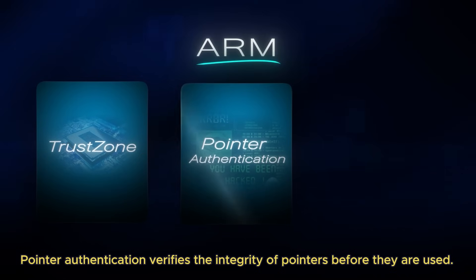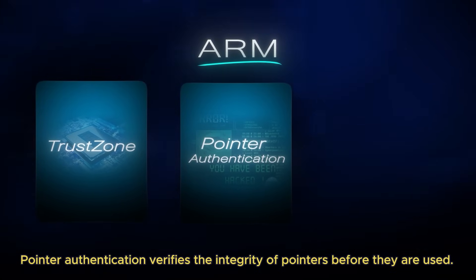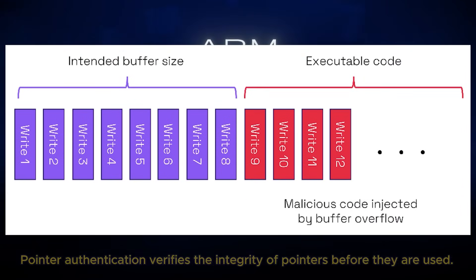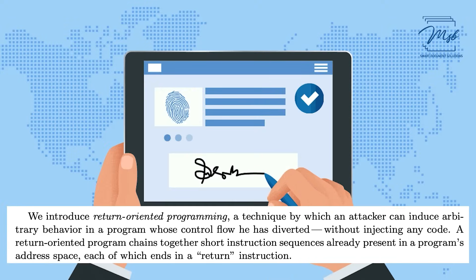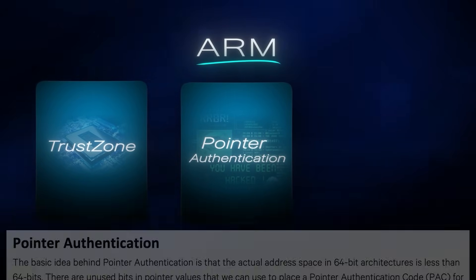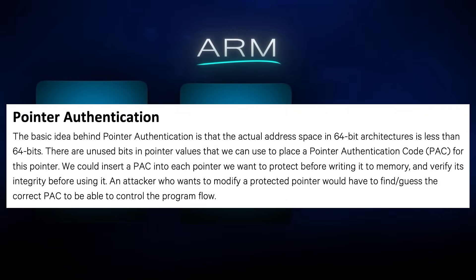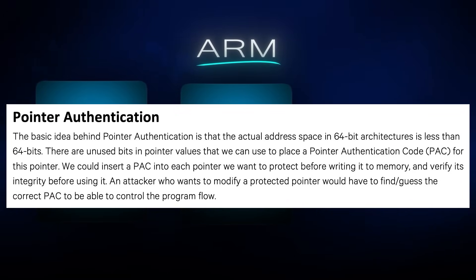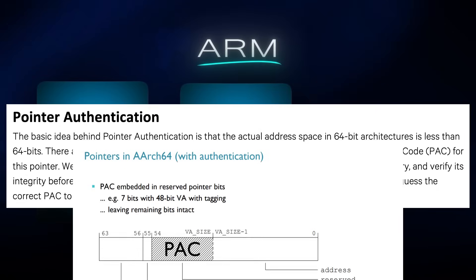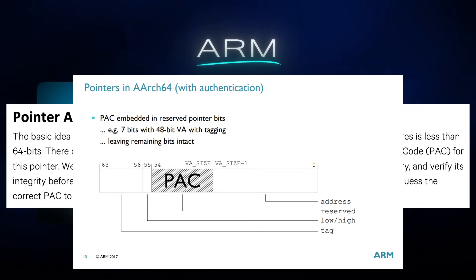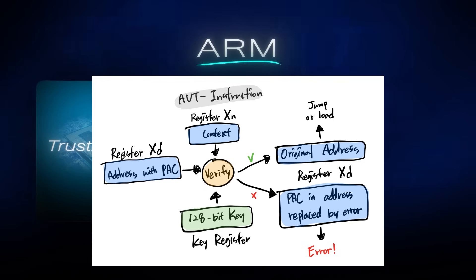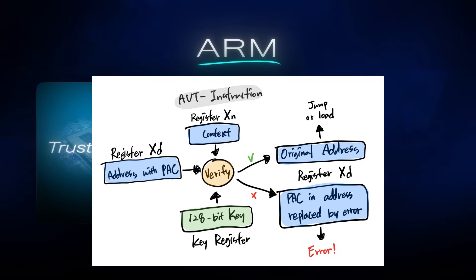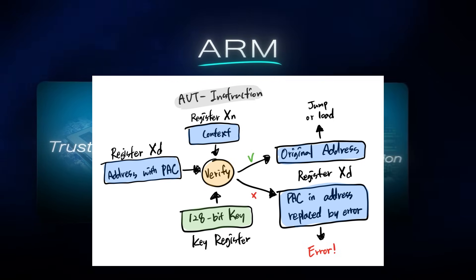Pointer authentication is a security feature designed to prevent memory corruption vulnerabilities such as buffer overflows and return-oriented programming attacks. It works by attaching a cryptographic signature known as a pointer authentication code or PAC to a program's pointers. When a program creates a pointer, a PAC is generated and stored in the unused high-order bits of the pointer's memory address. Before the pointer is used to access memory, the processor verifies this PAC. If the signature is invalid — meaning the pointer has been tampered with — the processor will raise an exception, effectively shutting down the malicious activity before it can cause any harm.